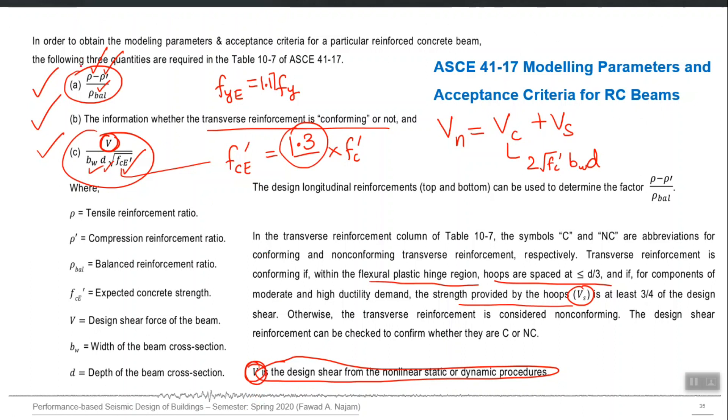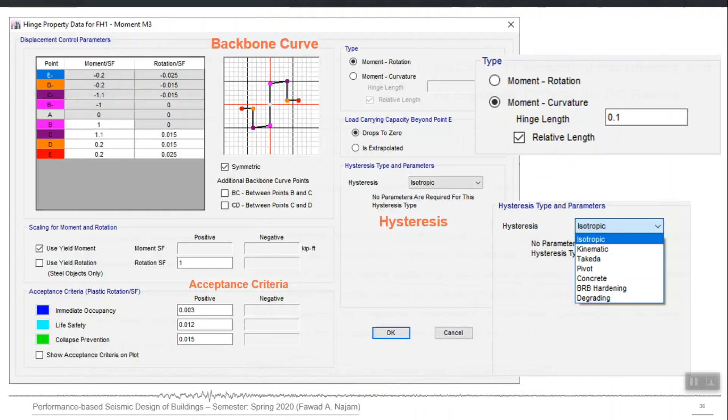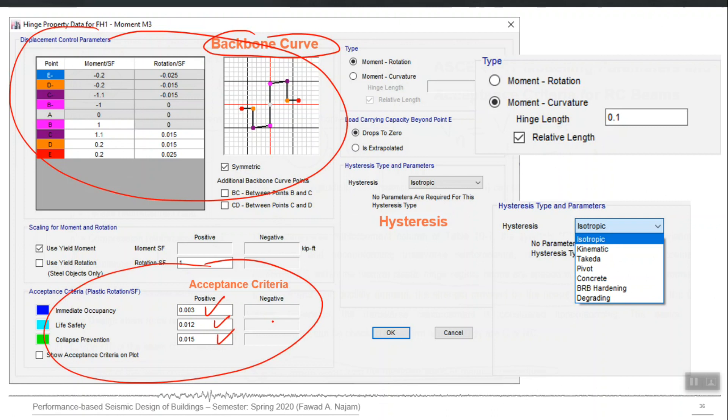You require all these three inputs in order to enter into that ASCE 41 table. Once you define that M3 hinge, that form which you have to fill has three main parts. One is the action deformation curve, which is the backbone curve. One is the acceptance criteria, IO, LS, and CP values for positive and negative side of the curve. And third is the hysteresis type, how the action deformation curve is going to unload and reload when there is a reversal of forces.